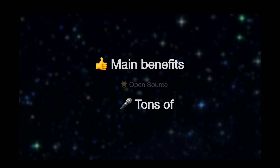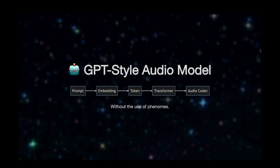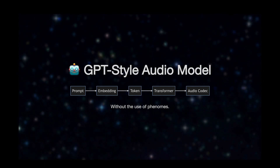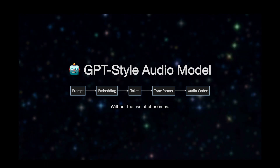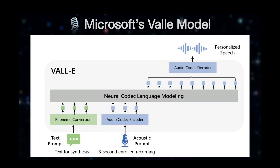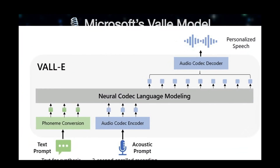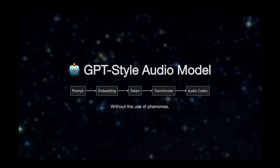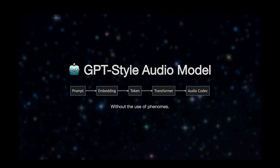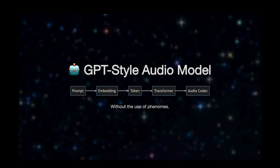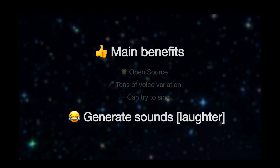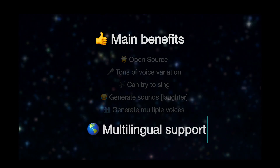Now I want to go over the main benefits, which is that it's open source and it's got tons of voice variation. This is all thanks to the GPT-style audio model that it uses behind the scenes. This is fairly unique when it comes to text-to-speech because it actually synthesizes on the fly, as opposed to more popular models such as Microsoft's VALL-E model, which uses phonemes — basic building blocks of sound — going directly from prompt to embedding to token to transformer all the way to audio codec, essentially synthesizing on the fly. This is what allows it to sing, generate sounds such as laughter, and even generate multiple voices in different languages.